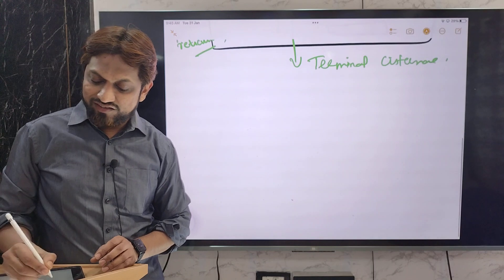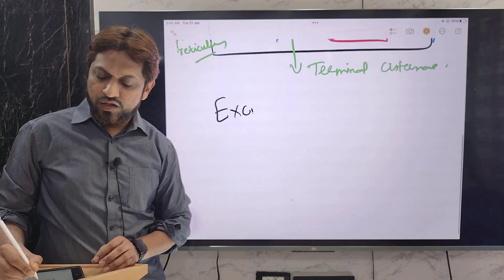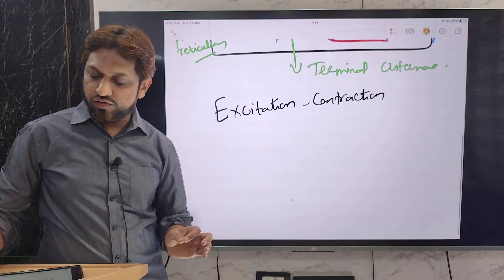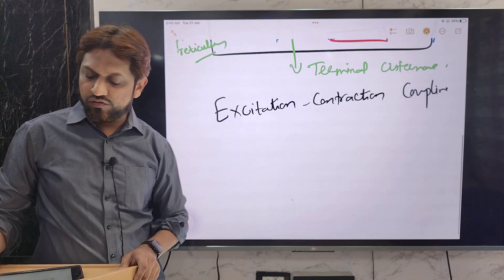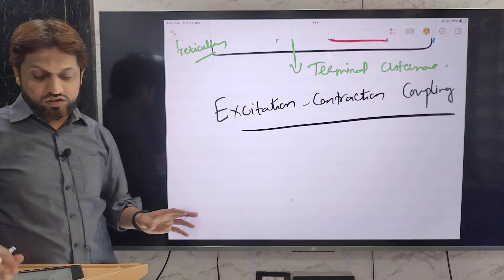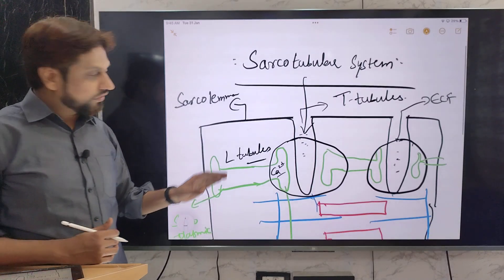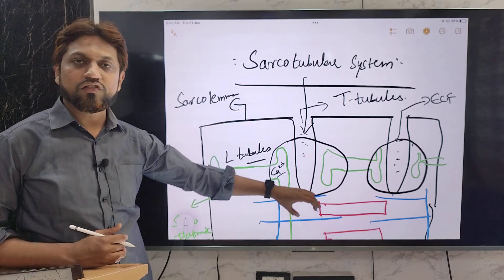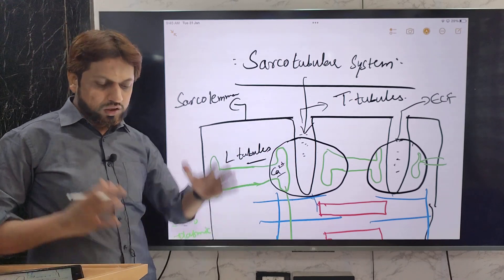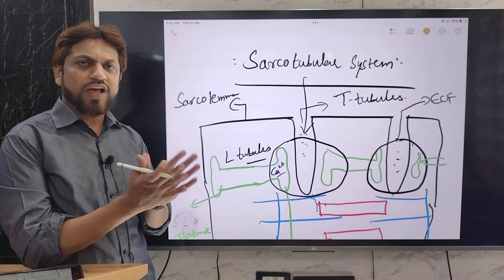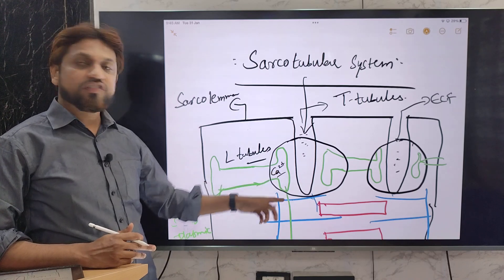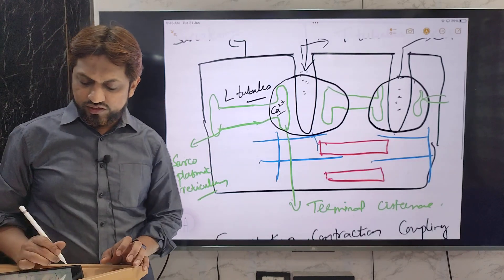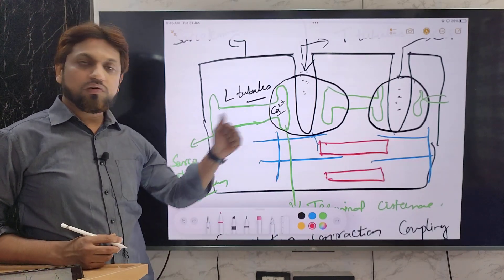This process is known as excitation-contraction coupling. Excitation refers to the spread of action potential, and contraction refers to the resulting muscle contraction. These two processes are coupled together, and the link between them is the calcium release by the sarcotubular system.